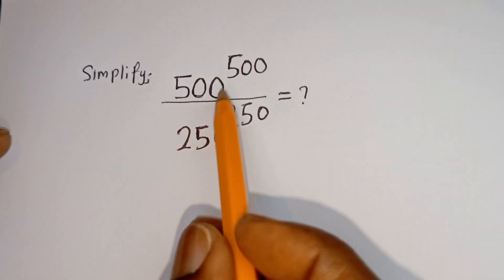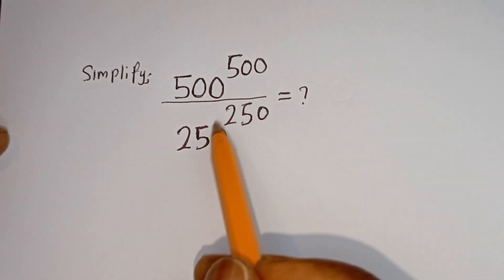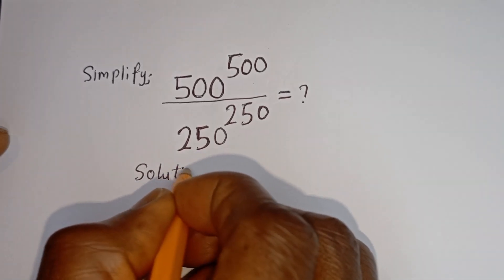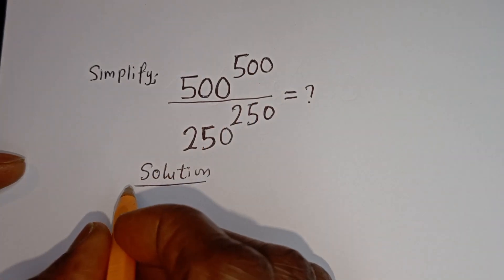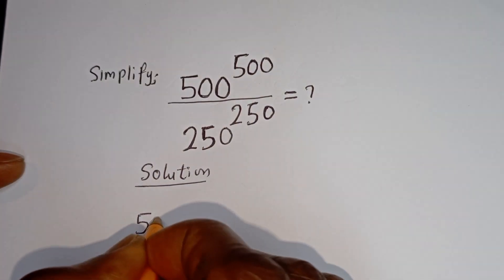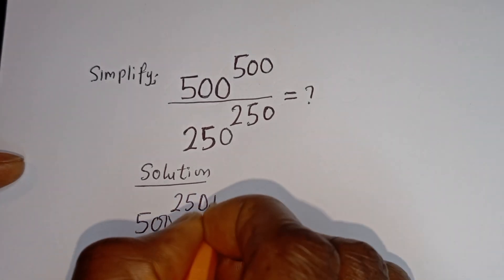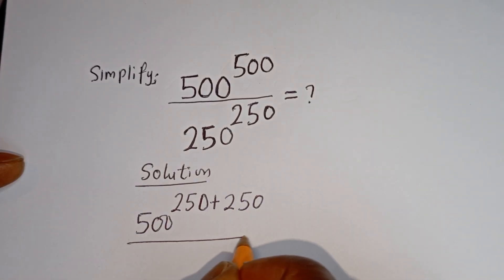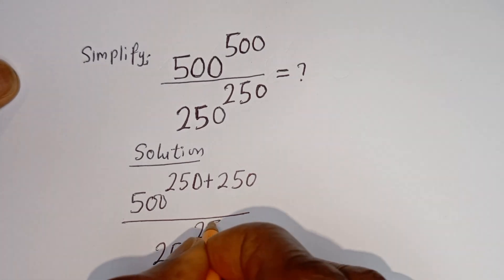Hello! How to simplify this nice math problem without using a calculator: 500 to the power of 500 divided by 250 to the power of 250. Solution: 500 to the power of 500 can be written as 500 to the power of 250 plus 250, divided by 250 to the power of 250.